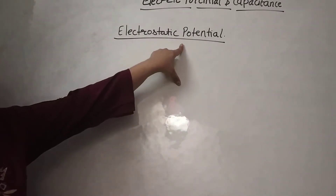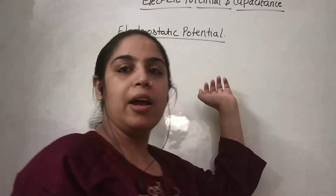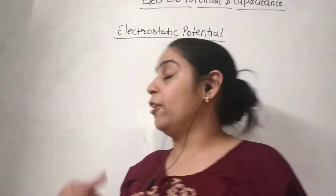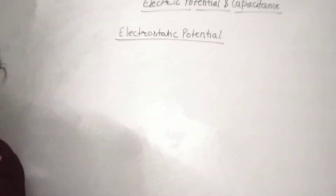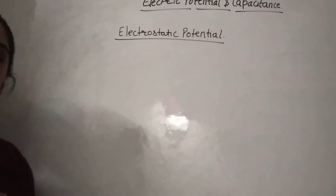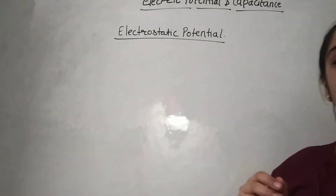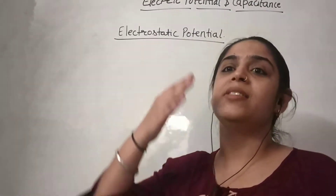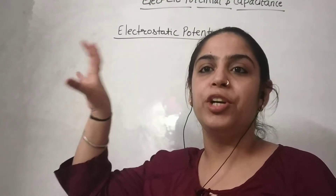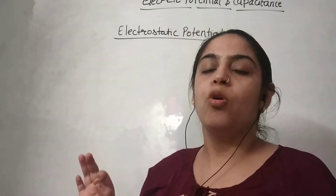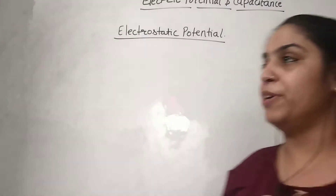So electrostatic potential is the amount of work done in taking a unit charge from infinity to that point. The work done is against the electrostatic force, and that work done is stored in the form of potential energy — just like when you lift a ball upward against gravity, that work done is stored as potential energy in the ball.